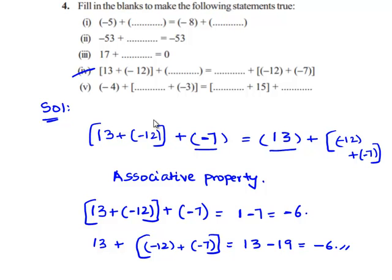Therefore, when 13, negative 12, and negative 7 are added in any order we get the same value. This is the associative property of the addition of integers.